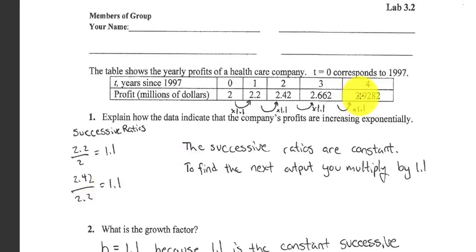If I were to divide 2.9282 divided by 2.662, I'd still get 1.1. So because successive ratios are constant, that's how I know that this is an exponential function. On a test or quiz, I would probably show two calculations like this, and then I'd say successive ratios are constant, so I know we have an exponential function.